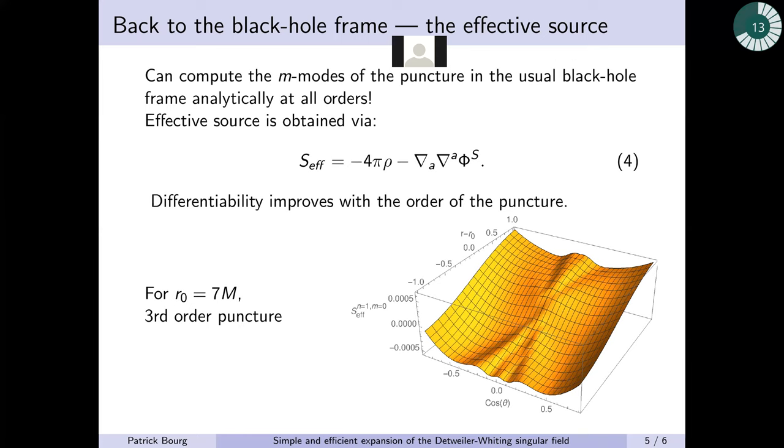In particular, I'm showing you some plots of the m equal to zero mode of the effective source at different orders in the puncture. I'm showing it to you by taking into account the first three orders of the puncture. With those three orders of the puncture, the effective source is continuous, even if it's not differentiable at the particle.